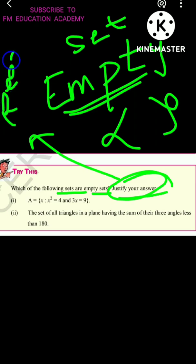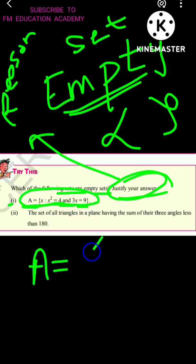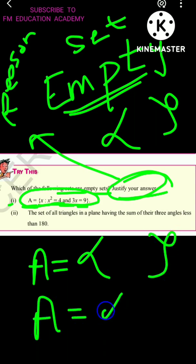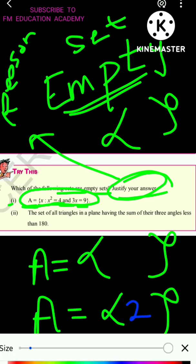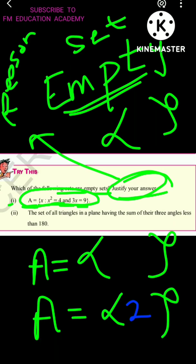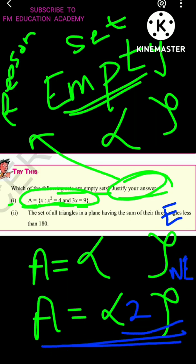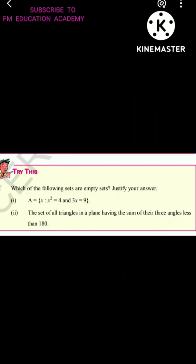In the first bit, A = {x : x² = 4 and 3x = 9}. It is asking whether set A will have any element inside it or not — whether it is an empty set or not. If it has elements, for example it has 2 inside it, that would be a non-empty set. We have to see whether A will contain elements according to the given conditions. The word 'and' means both conditions should be satisfied by the same element.